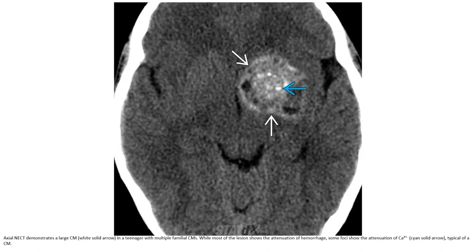Non-contrast CT demonstrates a large cavernous malformation in a teenager with multiple familial cavernous malformations. While most of the lesions show attenuation of hemorrhage, some show mixed attenuation typical of cavernous malformation.